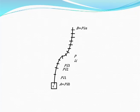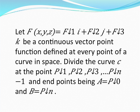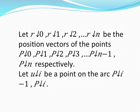Any integral which is to be evaluated along a curve is called a line integral. The curve is divided into a finite number of parts, that is a equals p-naught to b equals p-n. Let f(x, y, z) equals f1 i plus f2 j plus f3 k be a continuous vector point function defined at every point of a curve in space. Divide the curve c at points p1, p2, p3, ..., p(n-1), with endpoints a equals p-naught and b equals p-n. Let r-naught, r1, r2, ..., rn be the position vectors of the points p-naught, p1, p2, ..., p-n respectively.